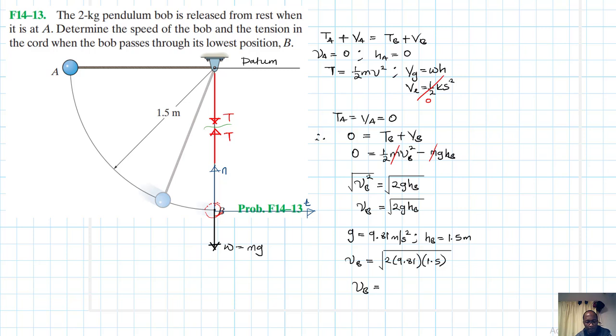2 by 9.81 by 1.5, and square root of that, this gives us 5.42 meters per second. So 2 by 9.81 by 1.5, let's square root of that. So there we go. We have found the velocity, the speed of this particular bob as it just passes B.